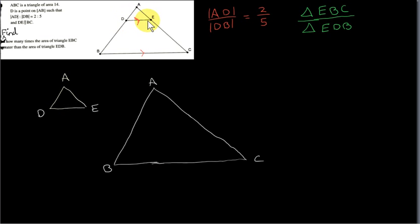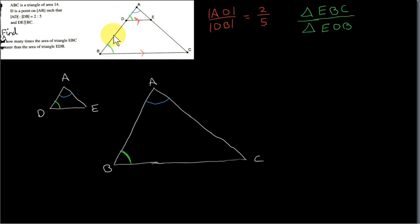Triangles ADE and ABC are similar or equiangular. The angle at the top is the same in both because the two triangles overlap there. Another pair of equal angles exists because DE is parallel to BC, giving us a pair of corresponding angles — whenever a line cuts through two parallel lines, corresponding angles are formed. Finding two equal angles means the third is automatically the same, so both triangles are equiangular or similar.